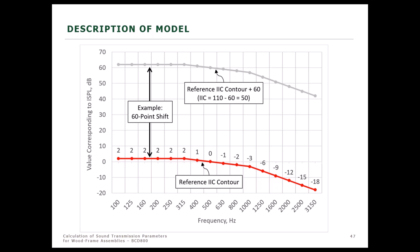Just like in the STC model, ISPL is estimated for the assembly at each one-third octave band frequency, and the ASTM E989 reference contour is fitted to the estimated ISPL contour such that the same conditions are met — sum of deficiencies not exceeding 32 decibels and no single-point deficiency exceeding 8 decibels. For IIC, a deficiency is counted only where the reference contour is lower than the ISPL. According to ASTM E989, the IIC is taken as 110 minus the number of points the reference contour has been shifted, so a reference contour shifted upward 60 points corresponds to an IIC of 50.